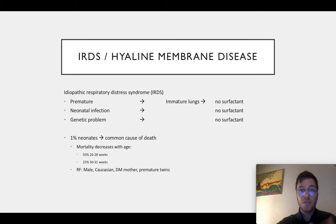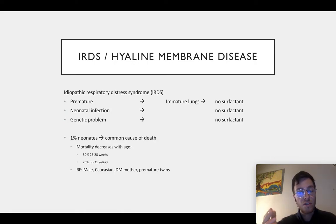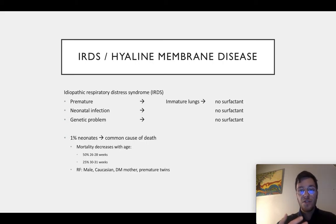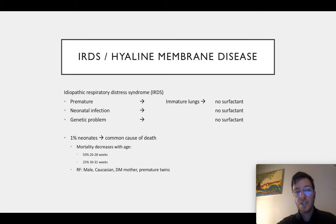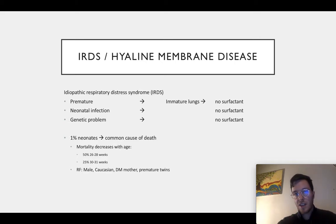First, the most common one: prematurely born children with immature lungs which are not able to make surfactant themselves yet. Then neonatal infections which destroy the surfactant in the lungs, and lastly some genetic problems which cause a problem with the production of surfactant in the lungs. All three lead to no surfactant and make breathing very difficult. 1% of all neonates is born with any of these conditions, and it's a common cause of death in infants. Mortality decreases with increasing gestational age — it's 50% when children are born at 26 to 28 weeks, and only 25% when born at 30 to 31 weeks.